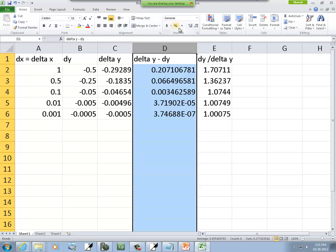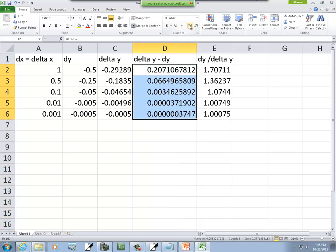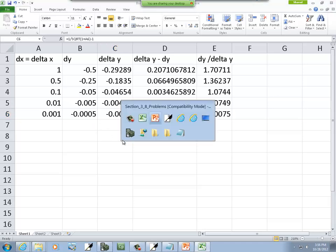There we go. So, you'll notice, as our delta x, dx becomes small, the difference between dy and delta y, they're pretty much just the same. You can see the difference is 0.000003747. I probably didn't say enough zeros, but that just shows what happens as your dx, your delta x, becomes small. Then they become one and the same. So, it's a good approximation.